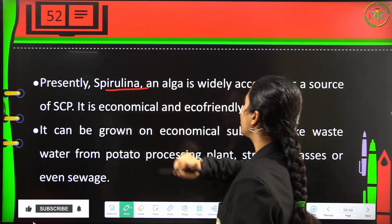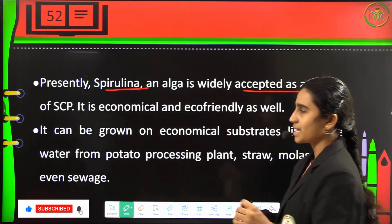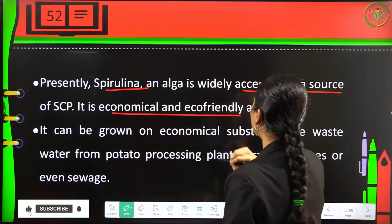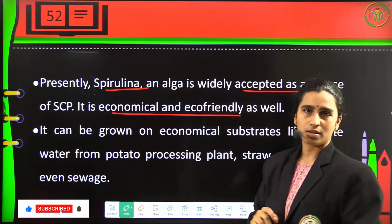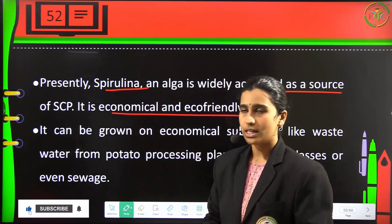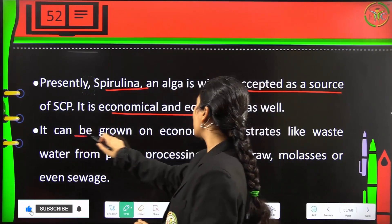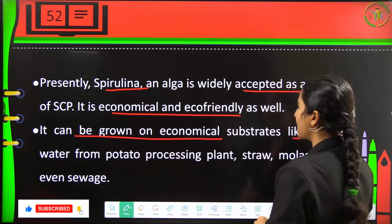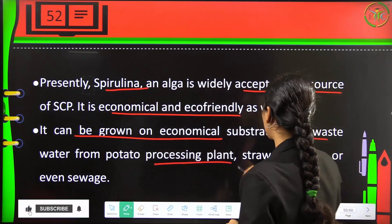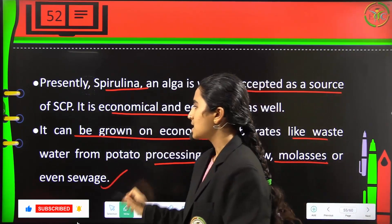Presently, spirulina and algae are widely accepted as a source of SCP — single cell protein. It is economical, affordable, and eco-friendly, not harmful to humans. It can be grown on economical substrates like wastewater from potato processing plants, straws, molasses, and even sewage — spirulina can grow in sewage.